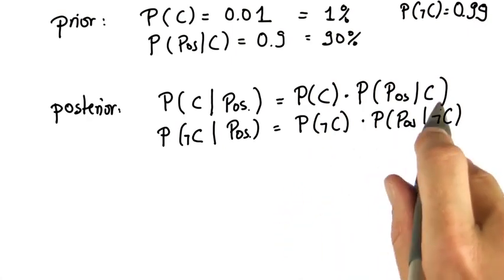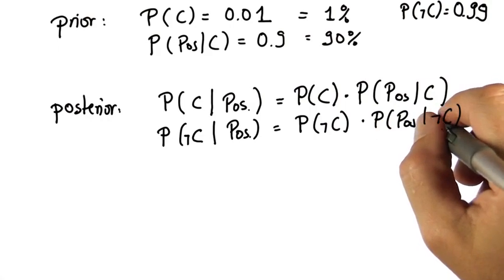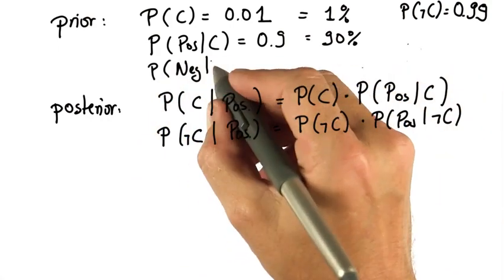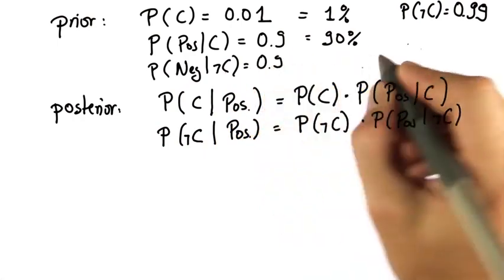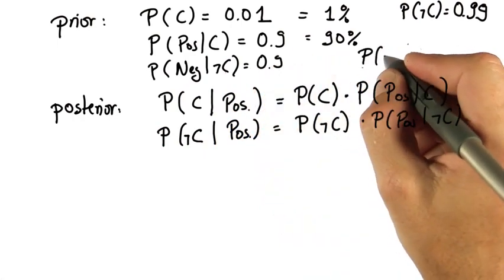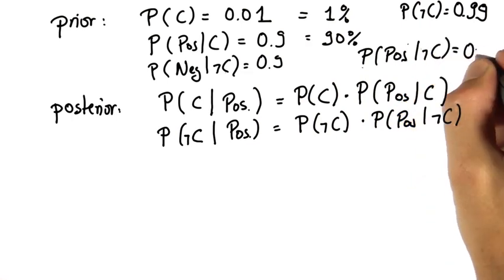Realize these two equations are the same, but I exchanged C for not C. And this one over here takes a moment to compute. We know that our test gives us a negative result if we're cancer-free with 0.9 chance. And as a result, it gives us a positive result in the cancer-free case with 10% chance.